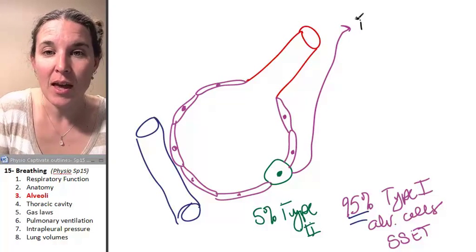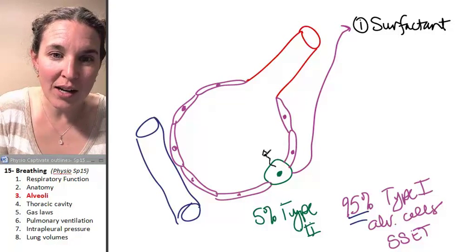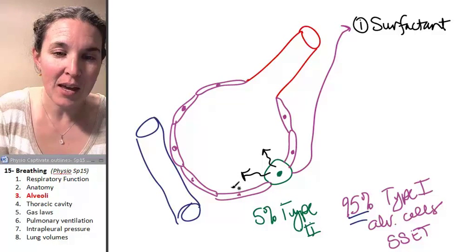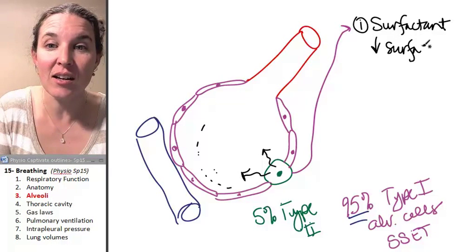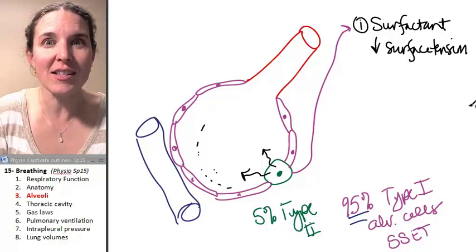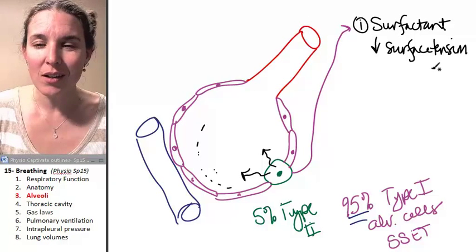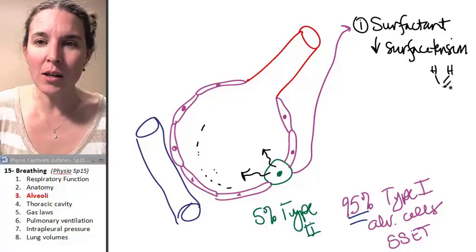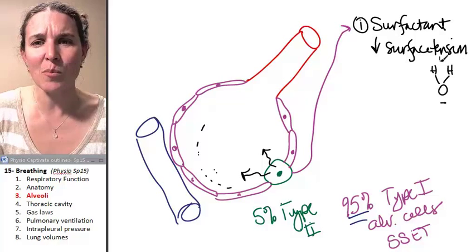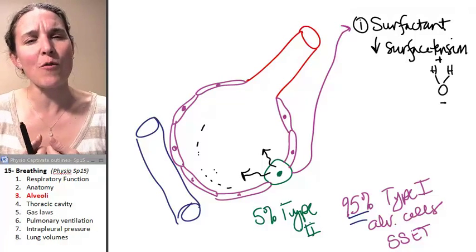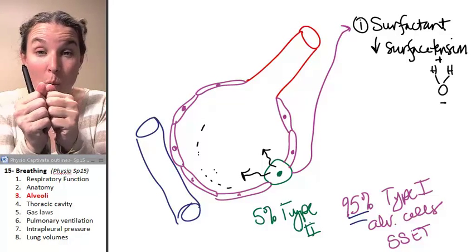Number one, they produce a substance called surfactant, and they squirt it out into the alveoli. And so surfactant decreases surface tension. And hopefully, this is another Bio 1 review fact, hopefully you remember that water molecules, how cool is this? Because water molecules were polar molecules. So they had a partially negative side and a partially positive side, which means that they form hydrogen bonds with each other. And so they kind of stick together.